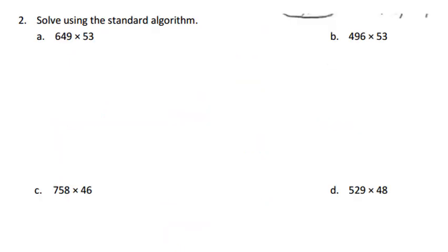Now we're just going to use a standard algorithm and I'm going to start off by doing an estimate to make sure that my standard algorithm is close. I know 649, I'm rounding to the nearest 100, so that's going to be 600 times, and we're going to the nearest 10 on this one, so that would be 50. I know 6 times 5 is 30 and I'm going to have three zeros, so that should be close to 30,000. So let's try now 649 times 53.